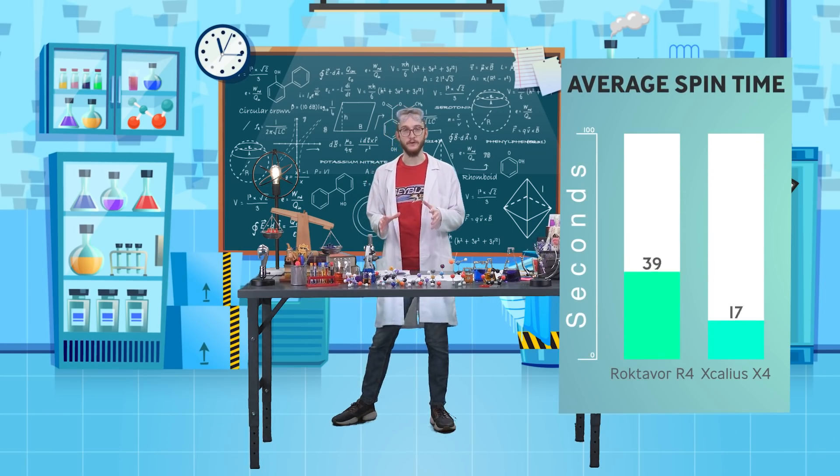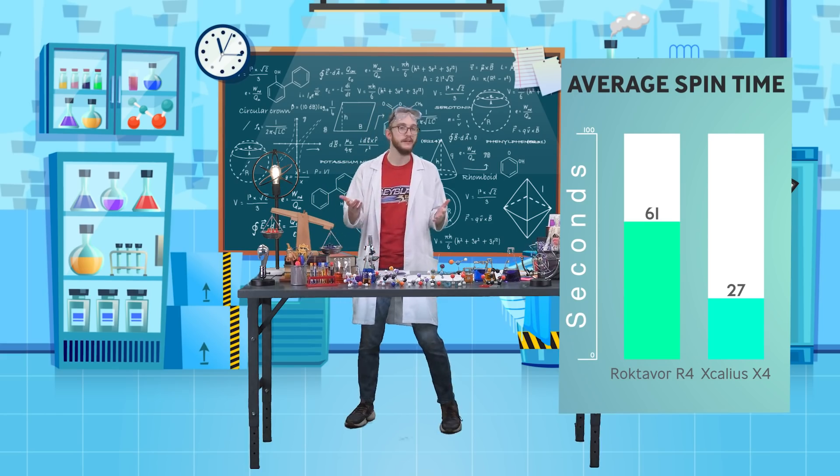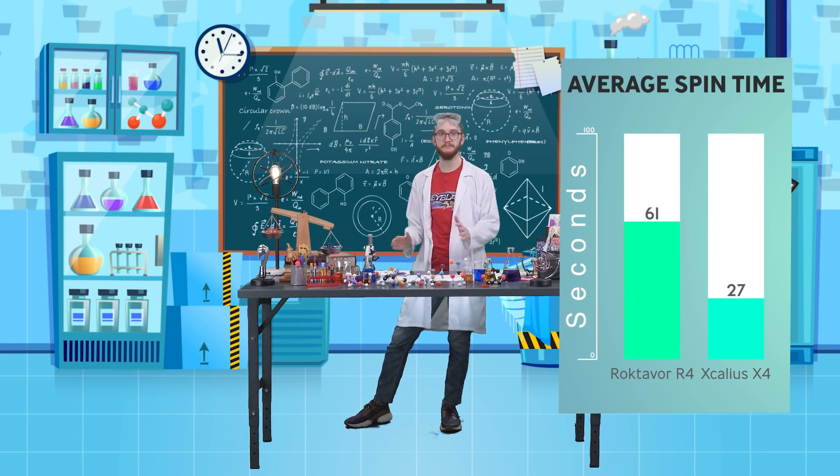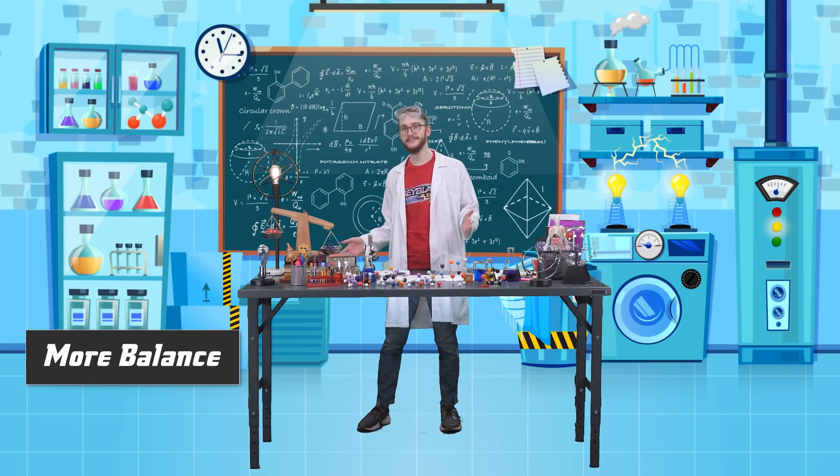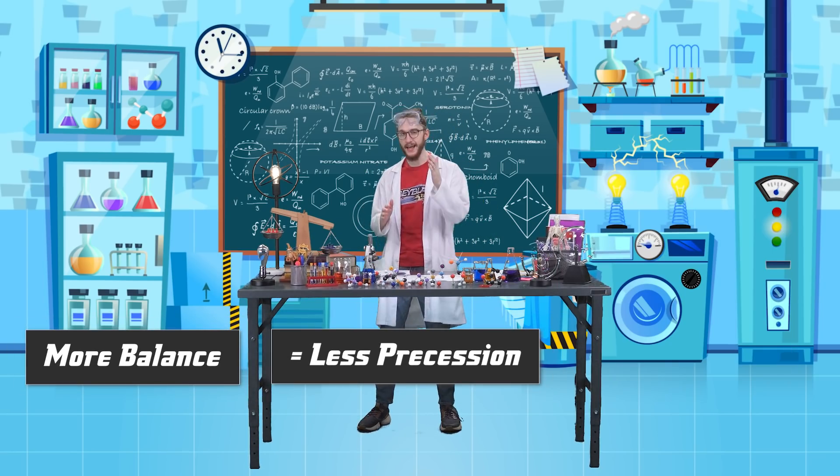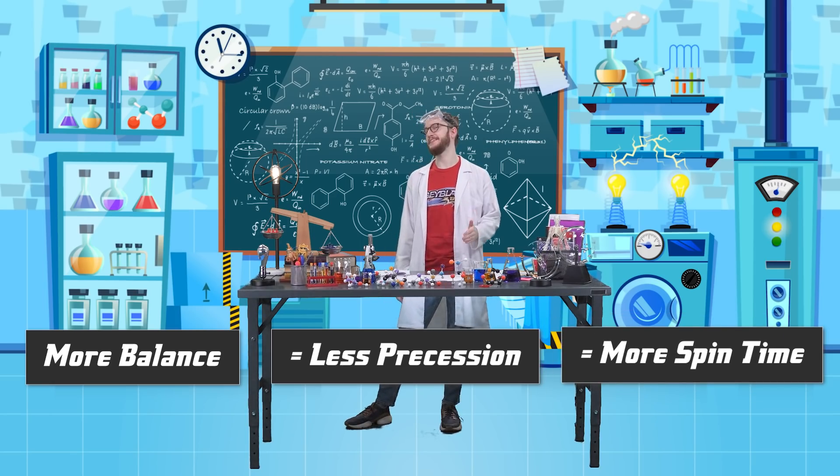Excalius X4 spun on average for 27 seconds, but Roktavor R4 spun on average for 61 seconds. More balance means less precession and less precession means more spin time.